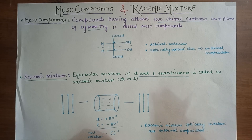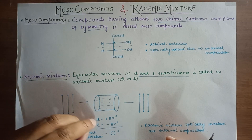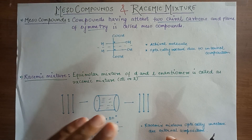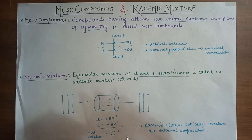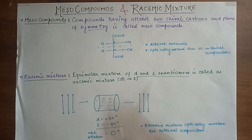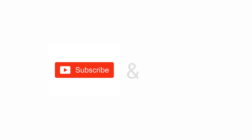External compensation means the D and L molecules individually show their own rotation, but due to external compensation the mixture becomes optically inactive. So this was about racemic mixture. Hope you have understood. Thank you. If you find this video useful then please subscribe and press the bell icon for latest updates. Thank you.